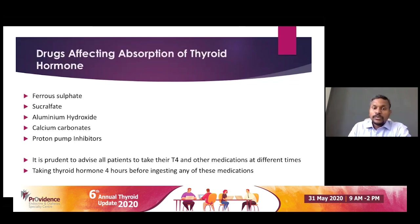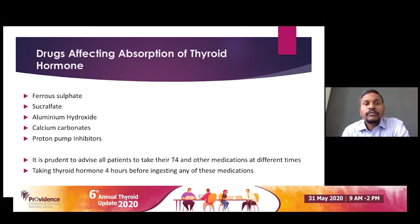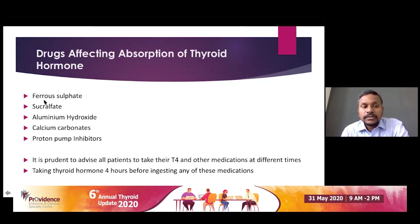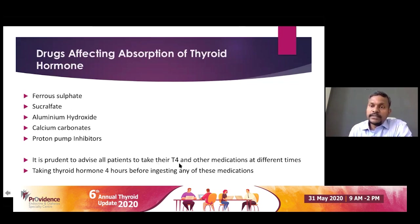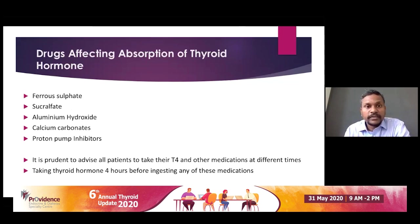The second major class is interference with thyroid hormone therapy — agents affecting the absorption of thyroxin. These include ferrous sulfate, sucralfate, aluminum hydroxide, calcium carbonate, and proton pump inhibitors. All these can affect the absorption of thyroid hormone. It is always advisable to space these agents from thyroid hormone administration by at least four hours so that thyroxine absorption is not affected.